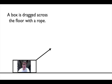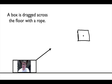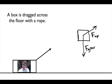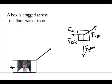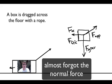Next, a box is dragged across the floor with a rope. Draw the box, then the force of gravity acting down. The box is being pulled at an angle — that's the applied force. There are also forces slowing it down: the force of friction, parallel to the surface, and the force of air resistance. Those are all the forces acting on that box.